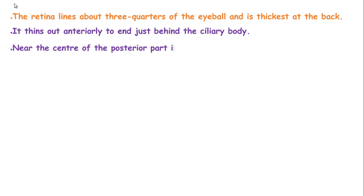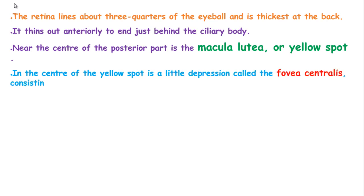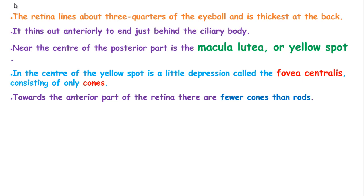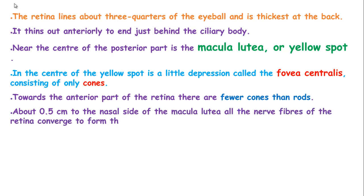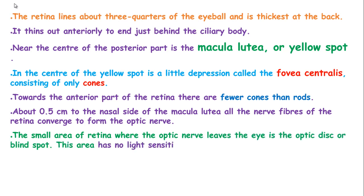Near the center of the posterior part is the macula lutea, or the yellow spot. In the center of the yellow spot there is a small depression known as the fovea centralis, which consists only of cones. Towards the anterior part of the retina there are fewer cones than rods. About 0.5 cm to the nasal side of the macula lutea, all the nerve fibers of the retina converge to form the optic nerve. The small area of the retina where the optic nerve leaves the eye is the optic disc, or the blind spot, and this area has no light-sensitive cells.